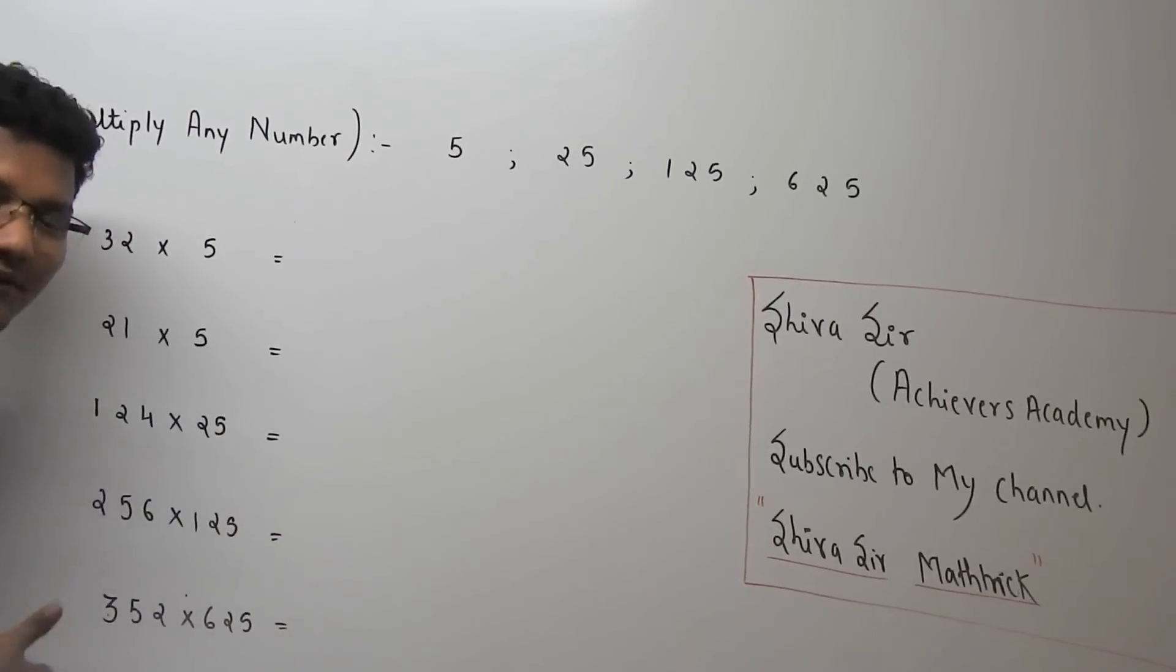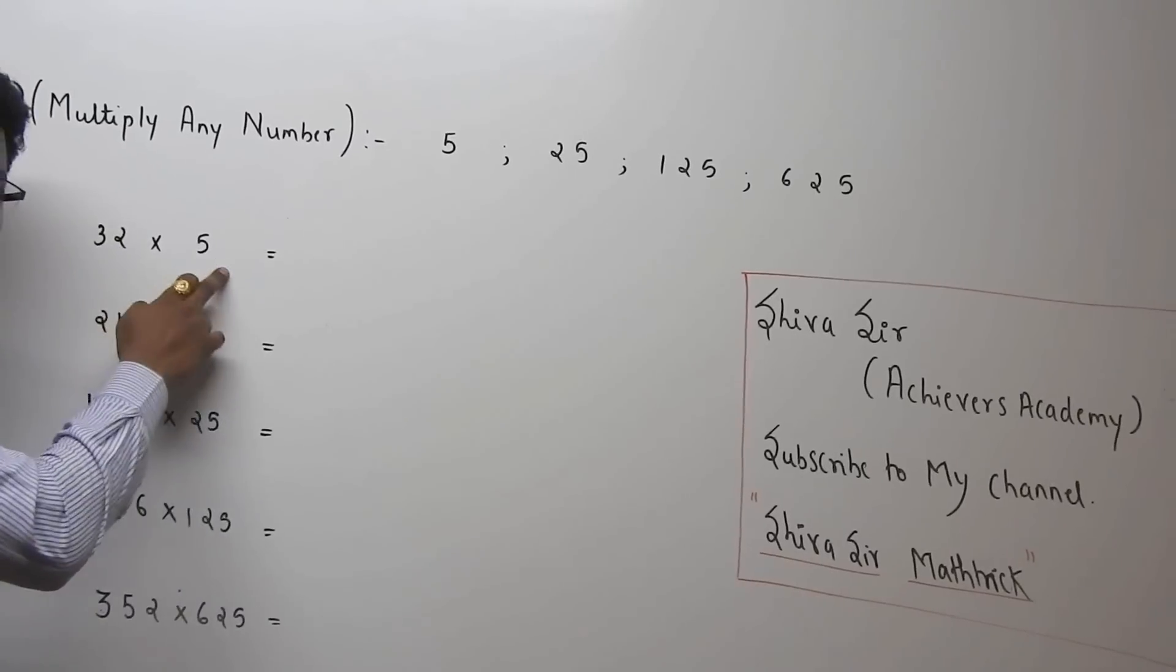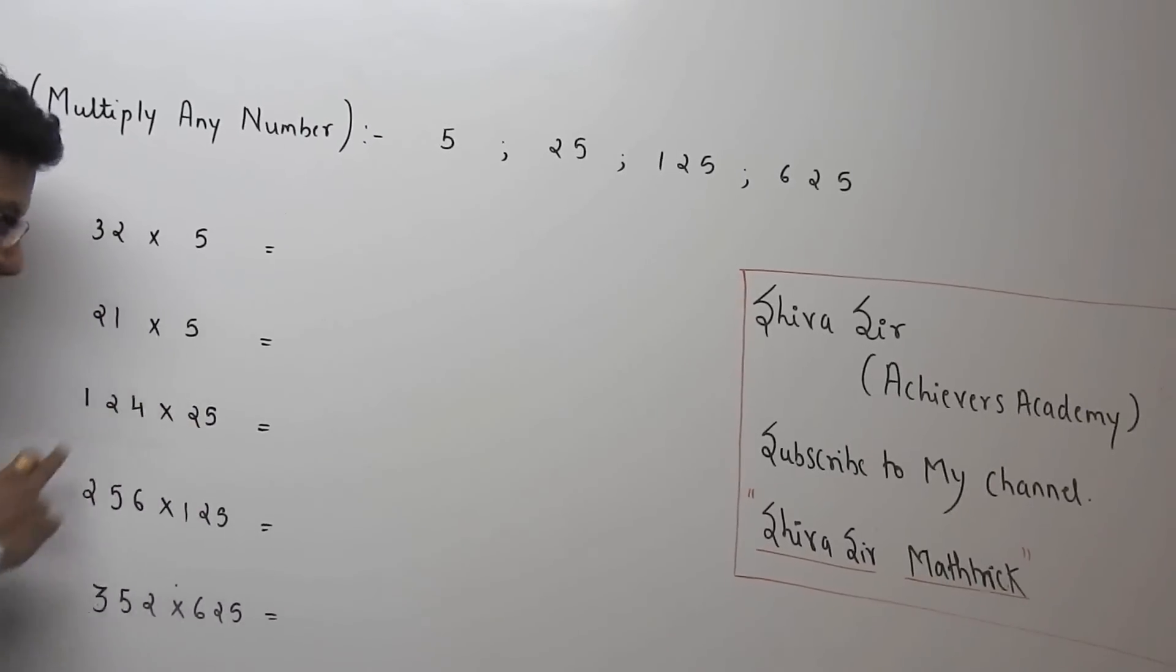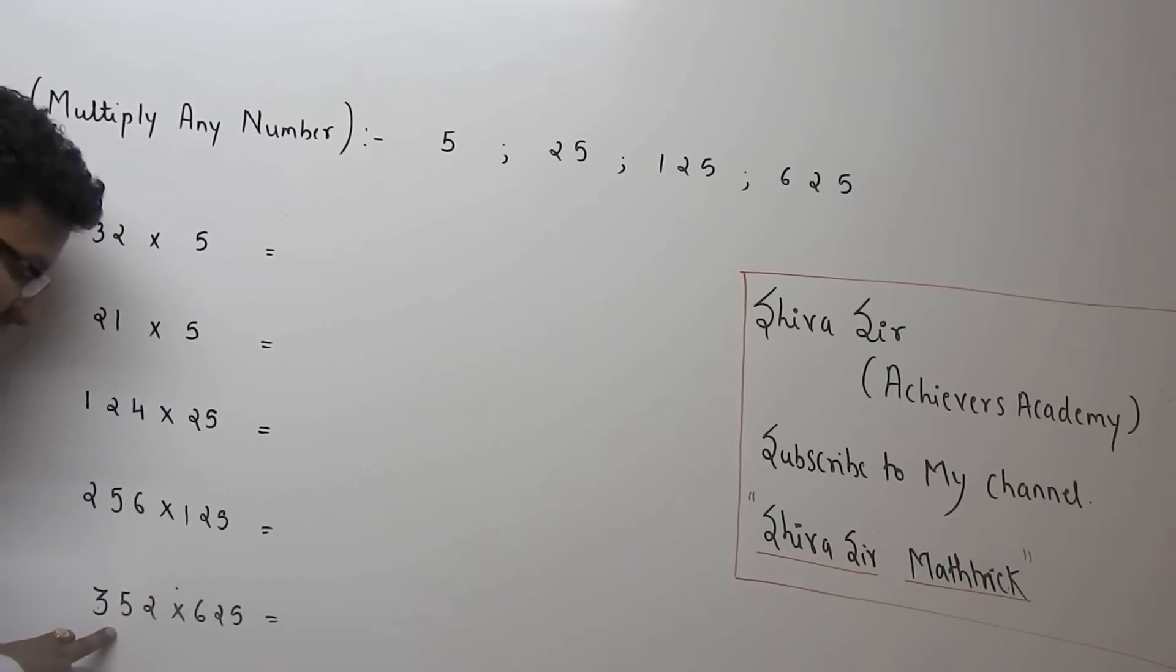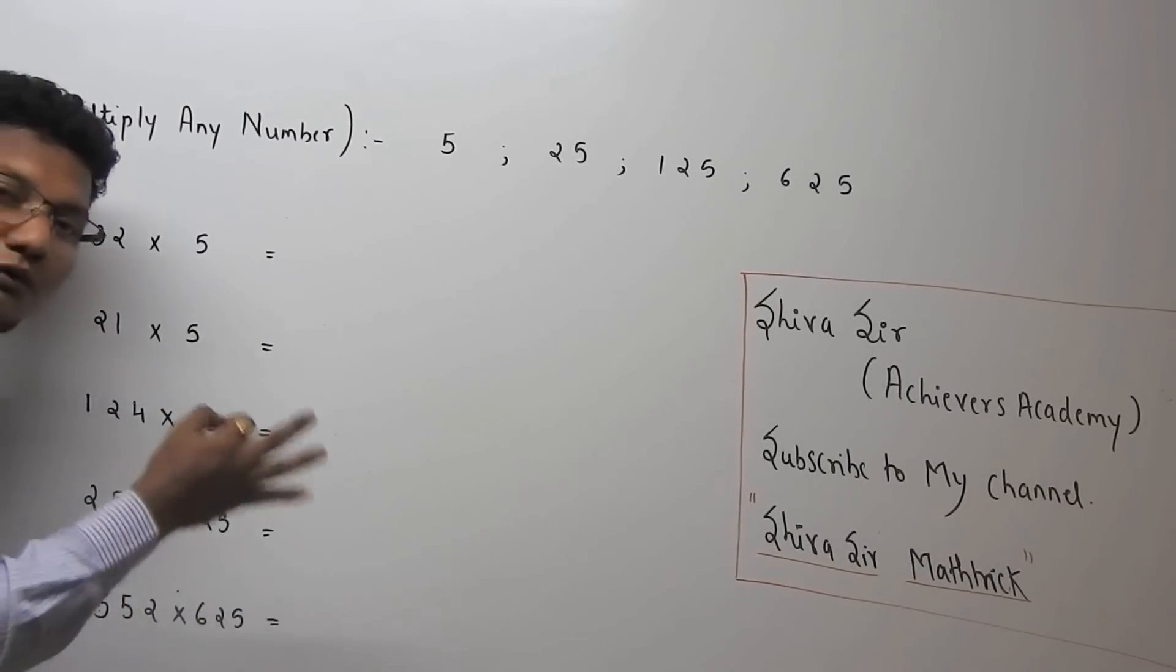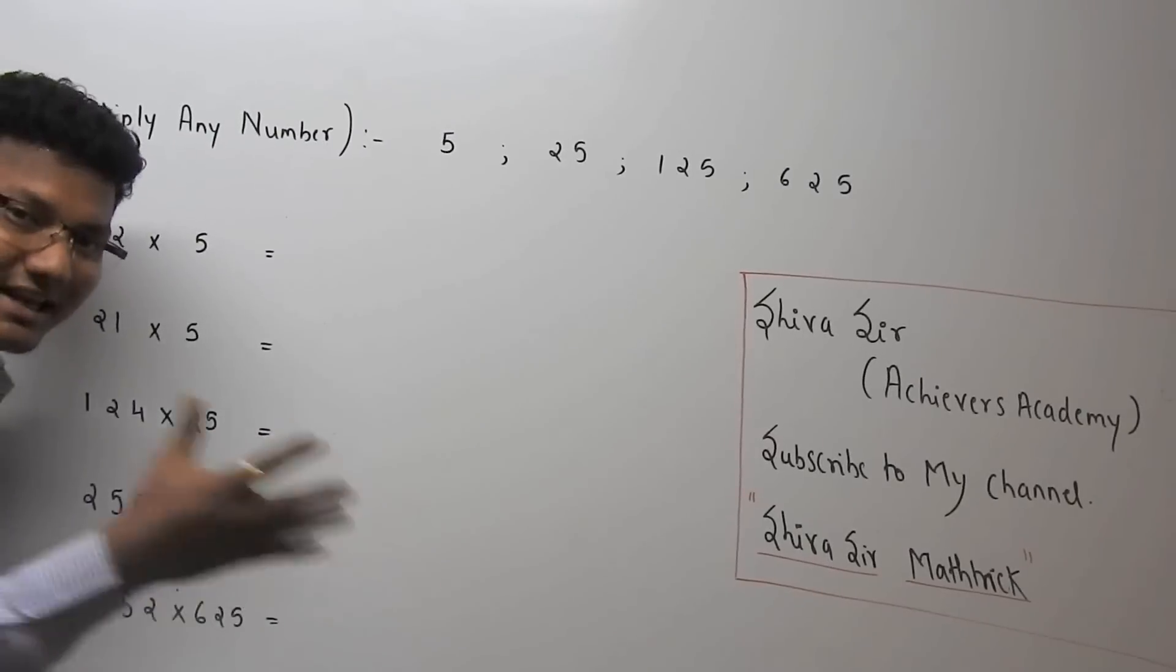Here are some examples in front of you: 32 × 5, 21 × 5, 124 × 25, 256 × 125, 352 × 625. How to find this answer in just a fraction of a second? Have a look.